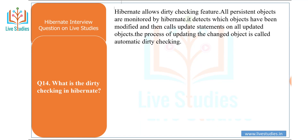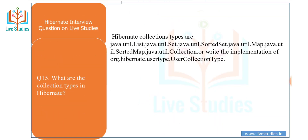Next question: what is dirty checking in Hibernate? Hibernate allows a dirty checking feature where all persistent objects are monitored by Hibernate. It detects which objects have been modified and then calls update statements on all updated objects. The process of updating changed objects is called automatic dirty checking.